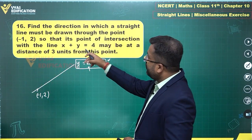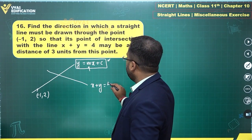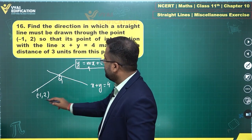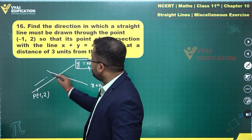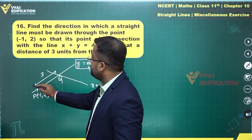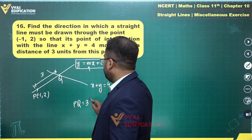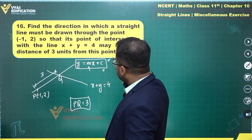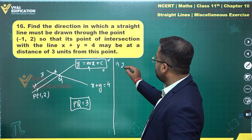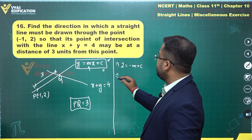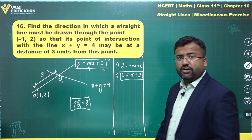The direction in which the straight line must be drawn is so that its point of intersection with the line x + y = 4 — let's call that point Q — is at a distance of 3 units from point P (-1, 2). Since P lies on our line, substituting gives 2 = -m + c, so c = m + 2, which lets us eliminate c easily.